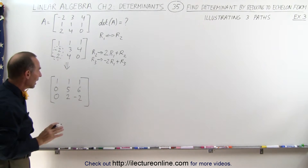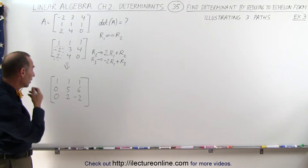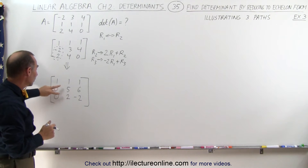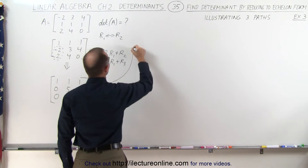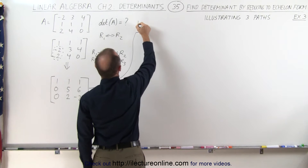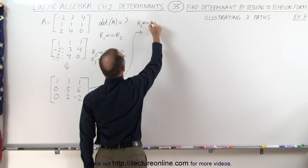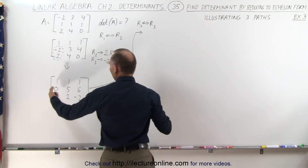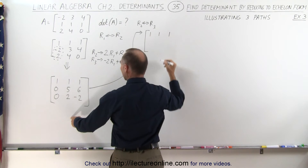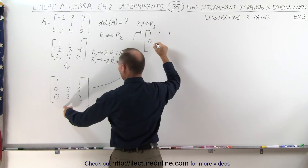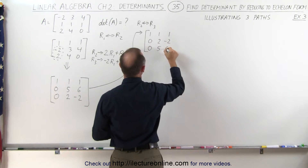Here we diverge — we're now going to finish the problem in three different ways. In Method 1, the first thing we do is interchange row 2 and row 3. When we do that, the first row doesn't change, the second row becomes 0, 2, negative 2, and the third row becomes 0, 5, and 6.